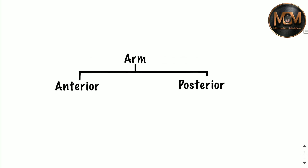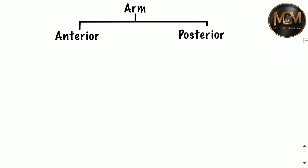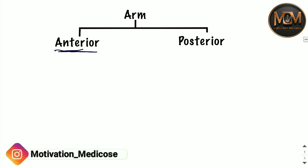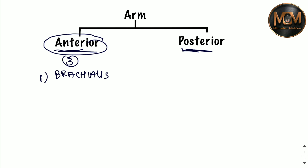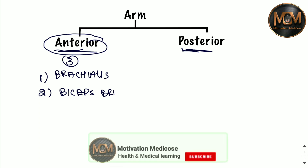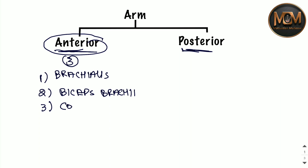Now the fourth region is the arm. We have divided the arm into two compartments: the anterior compartment and the posterior compartment. In the anterior compartment we have three muscles: the first is brachialis, the second is biceps brachii, and the third is coracobrachialis.